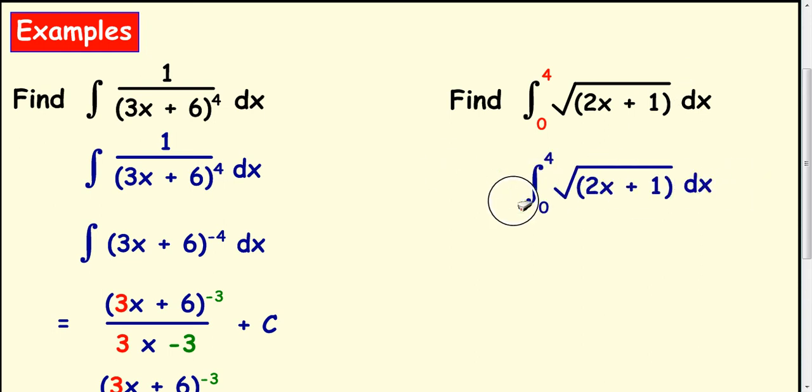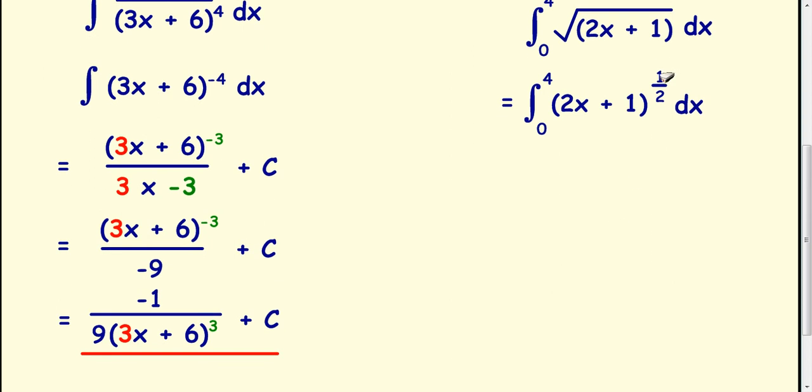So we want to integrate this here, and we want to write the power as a half. The square root is the same as a half. I then want to add 1 to the power. So if you add 1 to a half you get 1 and a half. But we'll write it as a top heavy fraction, 3 over 2. So that goes in the top.